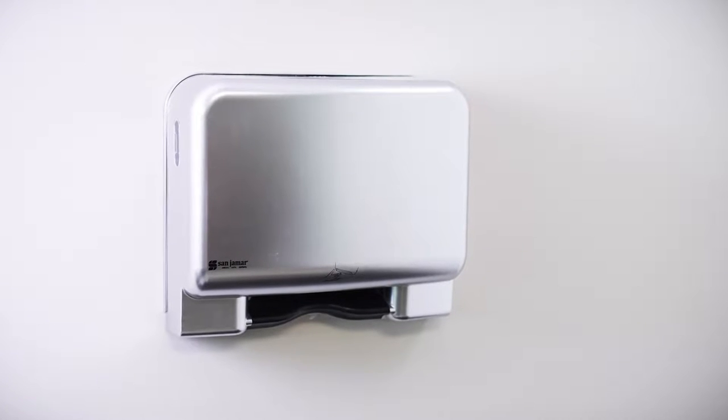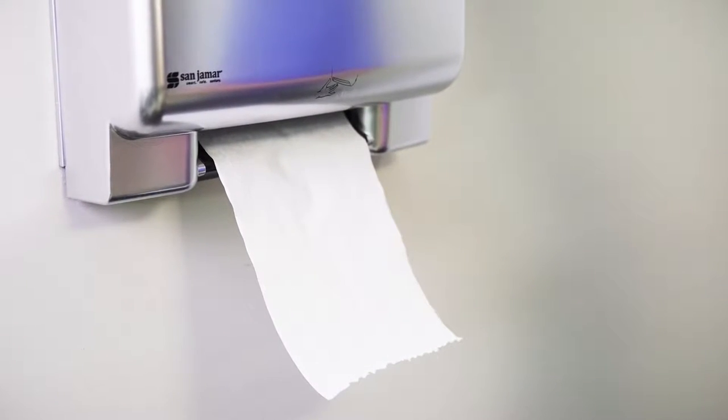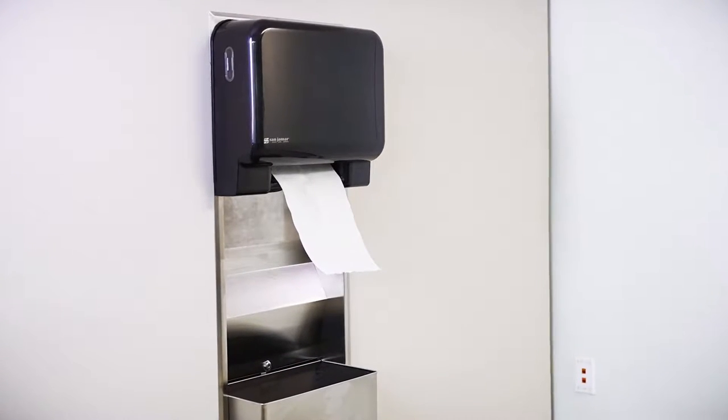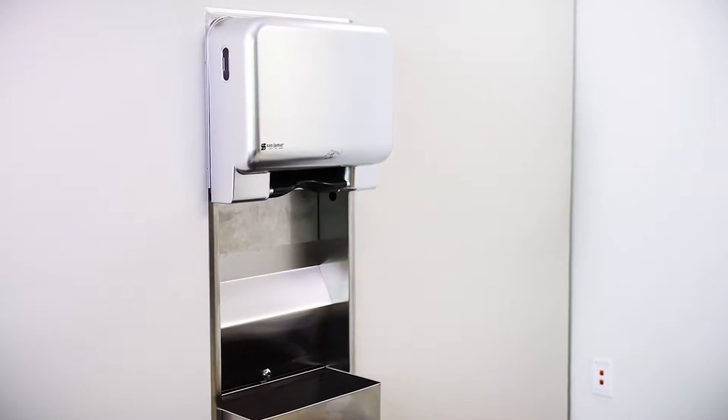Sanjumar offers maximum flexibility in recessed rolled towel options. You have a choice of installation type, such as Universal, which accommodates 8-inch paper-width installations, or ADA with 6-inch paper width, and a variety of dispenser functions.